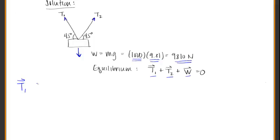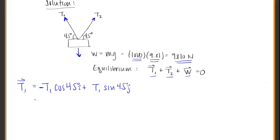To solve this, we take each cable and break it down into its components. The vector component for cable one is its tension T1 times the cosine of 45 degrees times i plus T1 times the sine of 45 degrees times j. T1 is off to the left but up, so the x component (cosine) is negative and the y value is positive. For cable two, going right and up, both components are positive: T2 cosine 45 degrees times i plus T2 sine 45 degrees times j.